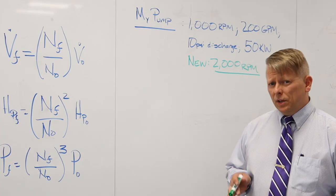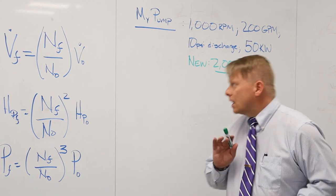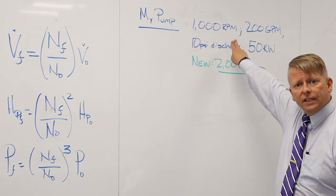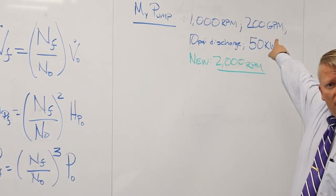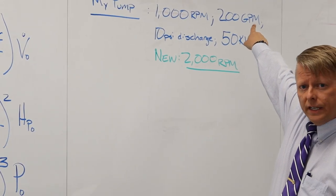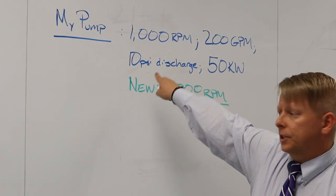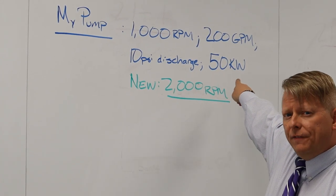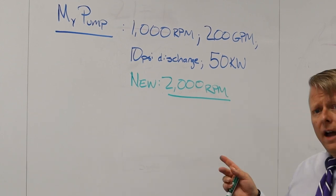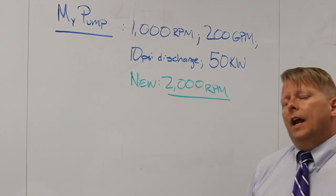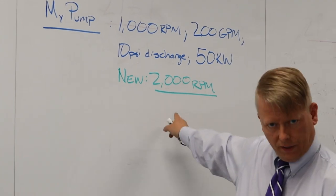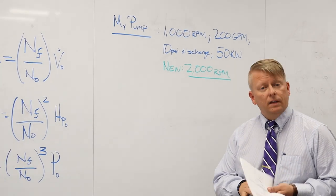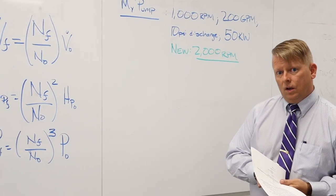So as promised, a real world-ish example. Let's say my pump has the following characteristics. It operates at 1,000 rpm. It discharges 200 gallons per minute at a discharge pressure of 10 psi. To do this, it requires 50 kilowatts of power. Now, say I change the speed to 2,000 rpm. What will be the impact on volumetric flow rate, pump head, and pump power?